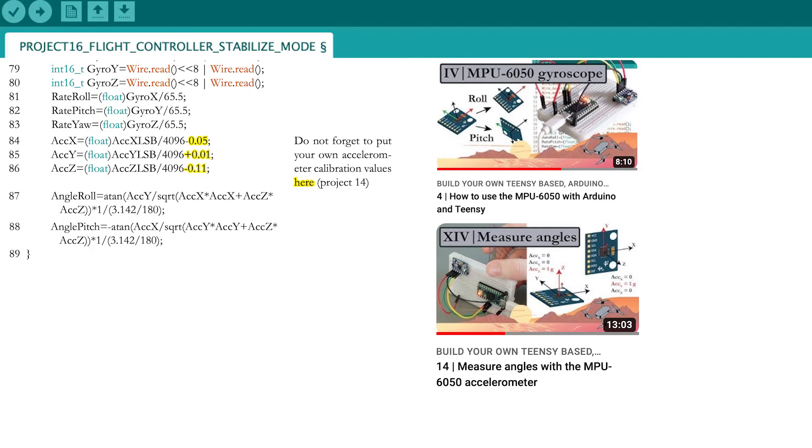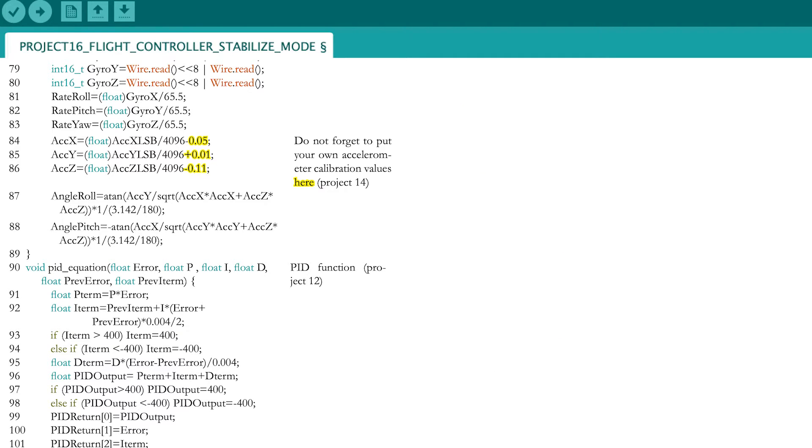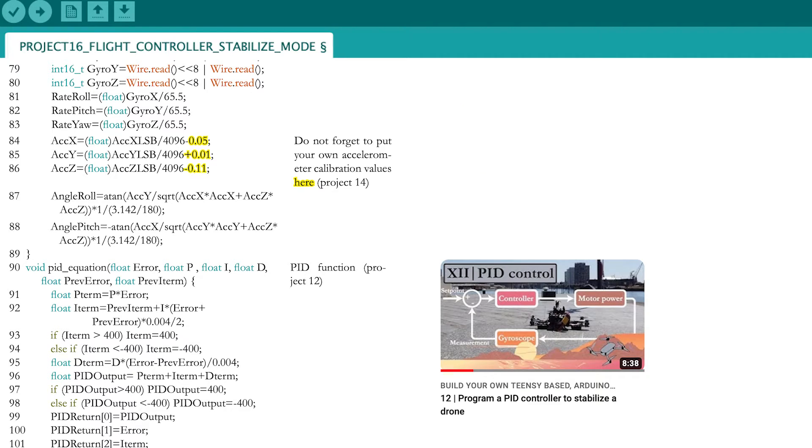Once again, put your own accelerometer calibration values for the numbers in yellow. The PID function is copied from part 12.